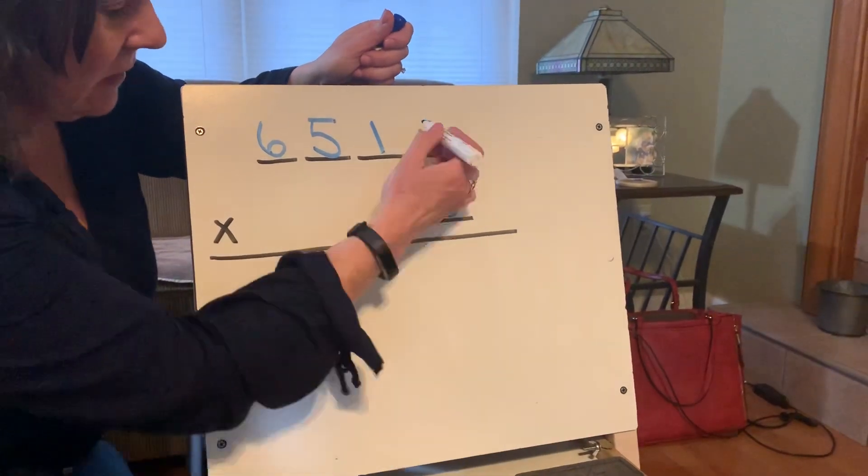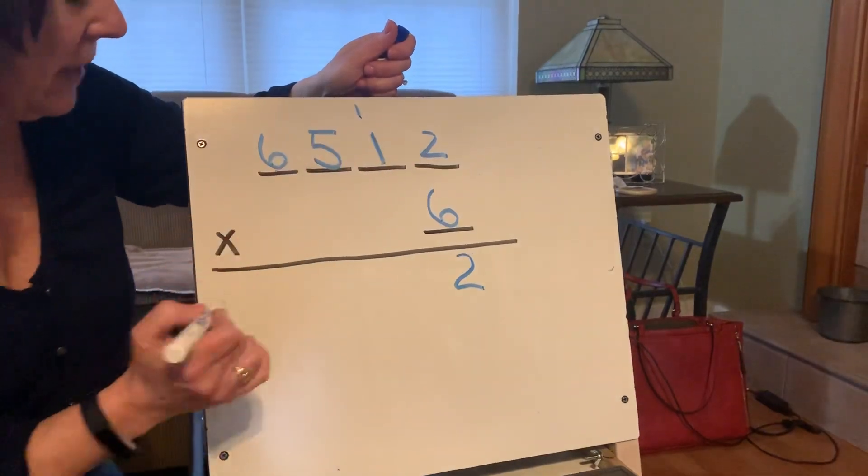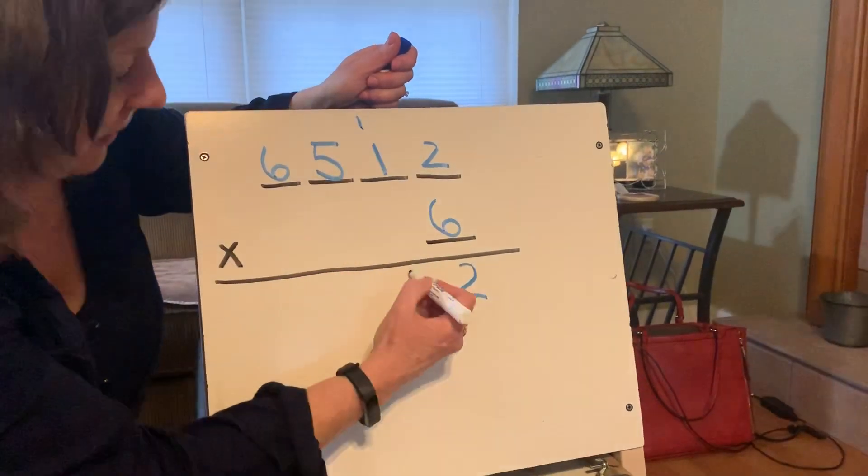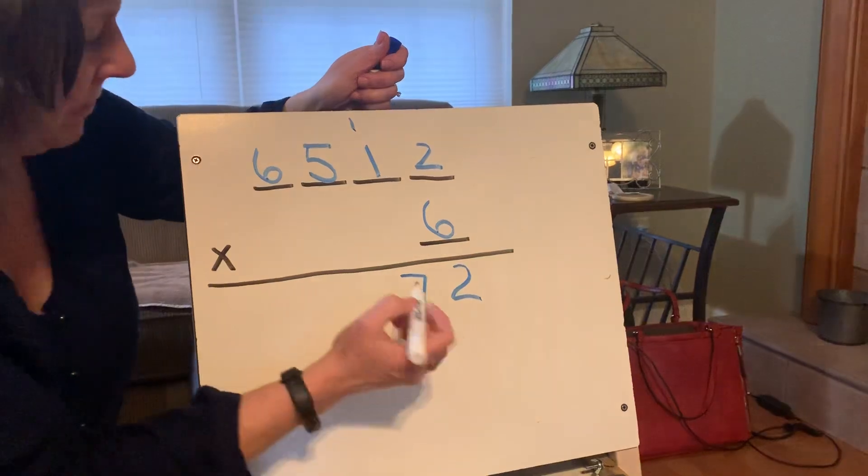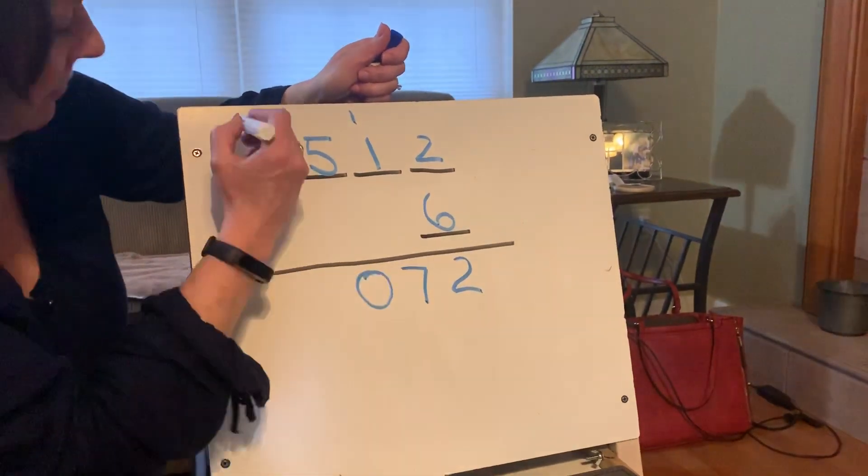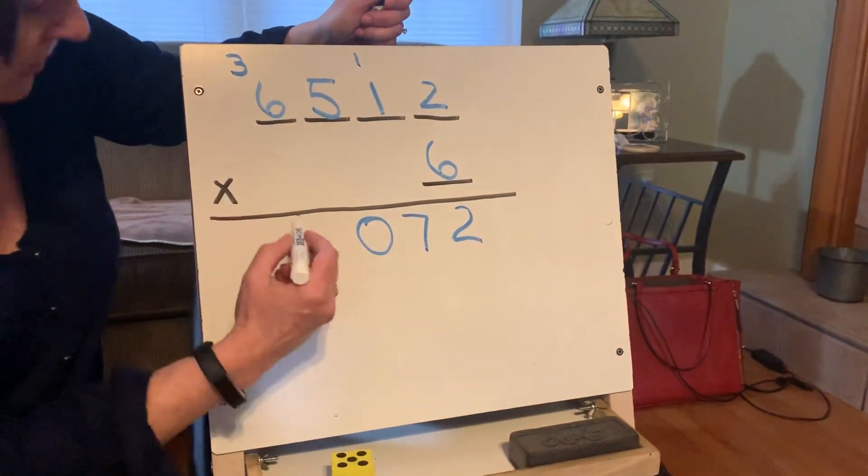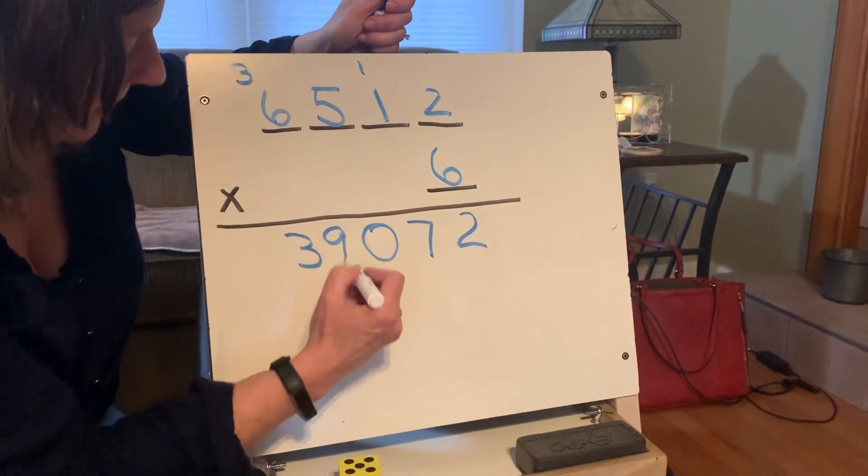And then I'm gonna multiply to see what my answer is. Six times two is twelve. Put my two. Regroup my one. Six times one is six. Plus one is seven. Six times five is thirty. Put my zero. Regroup my three. Six times six is thirty-six. Plus three. Thirty-nine.